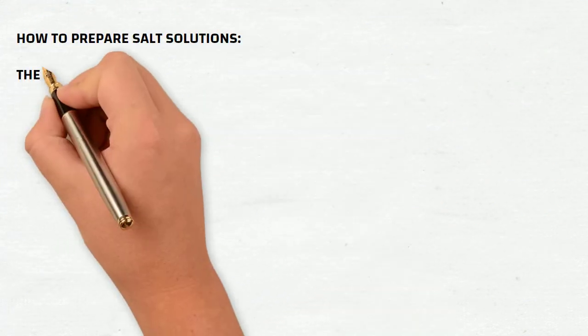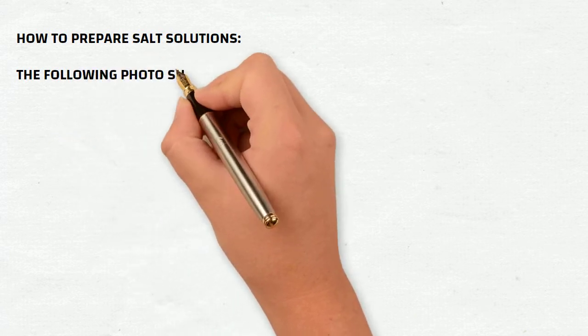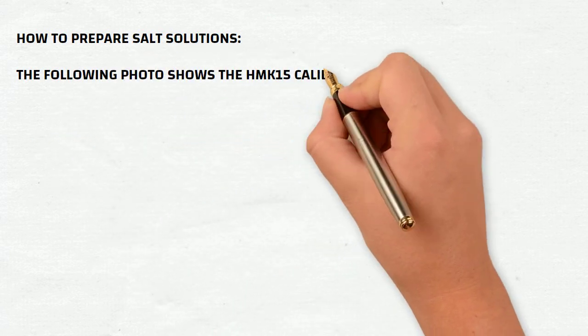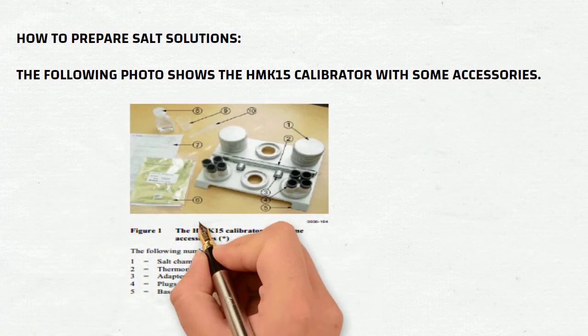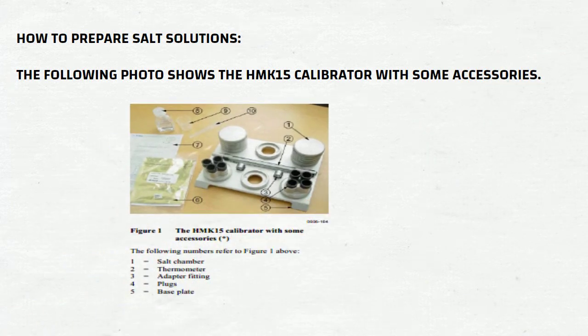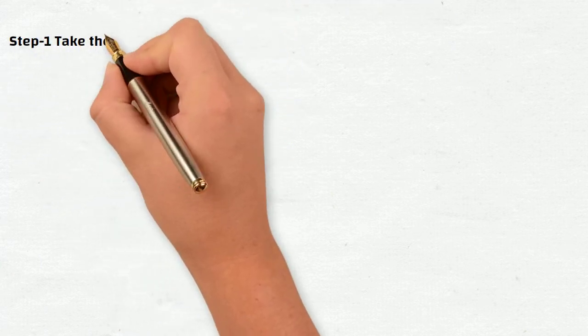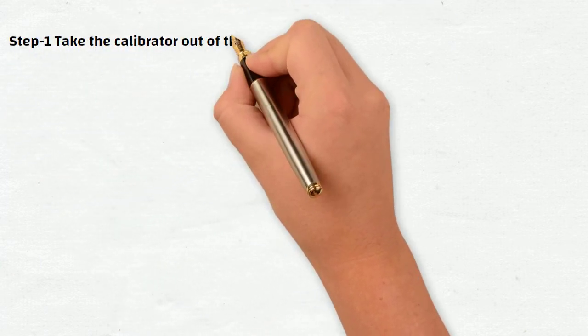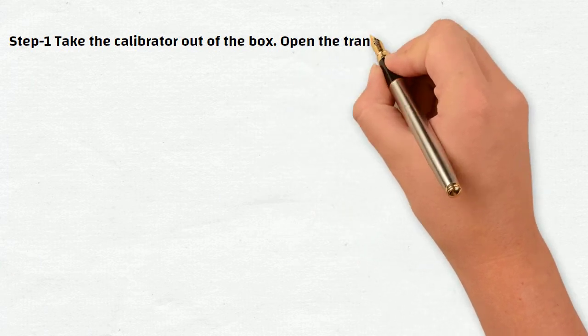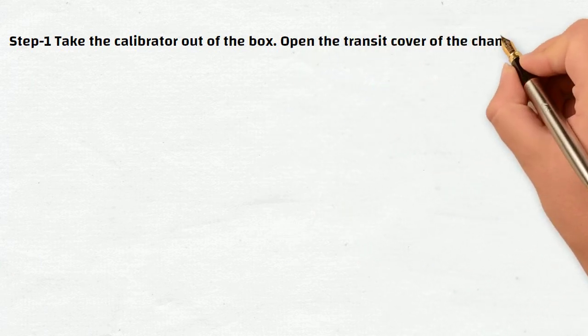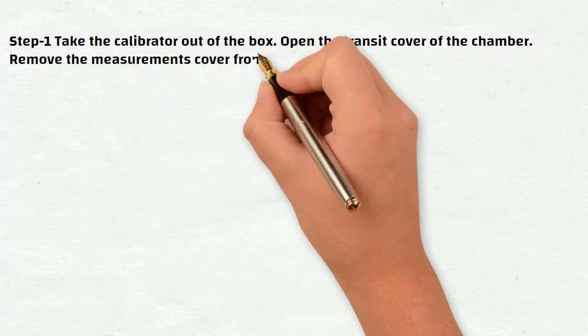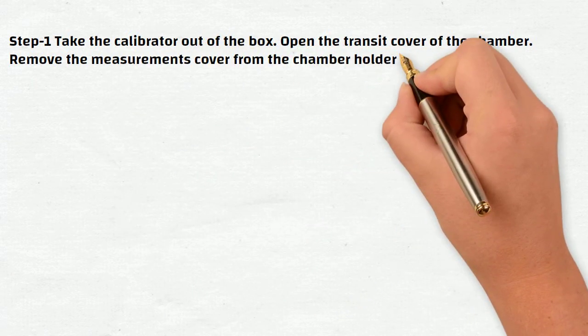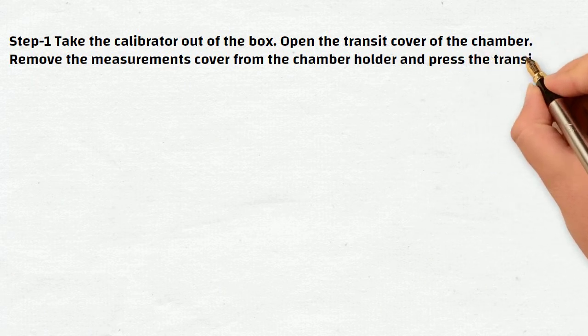So how to prepare salt solutions. The following photo shows the HMK-15 calibrator with some accessories. Step 1: Take the calibrator out of the box, open the transit cover of the chamber, remove the measurement cover from the chamber holder, and place the transit cover on the holder.